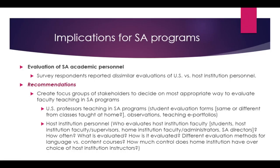Getting to the end, survey respondents reported dissimilar evaluations of U.S. versus host institution personnel. We have to know who evaluates host institution faculty, on what basis, how often, and what criteria are used, so that we can create a focus group and find the best way to do that. Limitations: the survey was the sole source of data, requiring triangulation with on-the-ground qualitative research through interviews with all stakeholders, a relatively small number of respondents, data collected on a cross-sectional design by researchers in the U.S., and we need a mixed-methods approach with longitudinal studies.